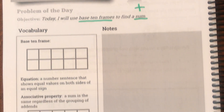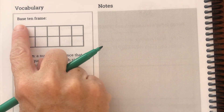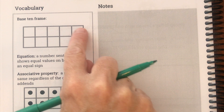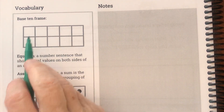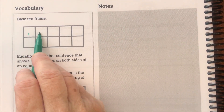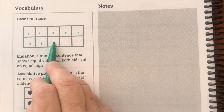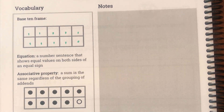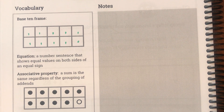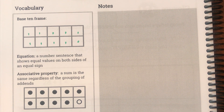Let's look at our vocabulary. This is a base 10 frame. If we count how many boxes there are — one, two, three, four, five, six, seven, eight, nine, ten — it's called a base 10 frame because there are 10 boxes. In your problems they're going to give them to you already drawn, so you're not going to have to draw them. You're going to see I have to draw them, but when you do your work it's going to be drawn for you.